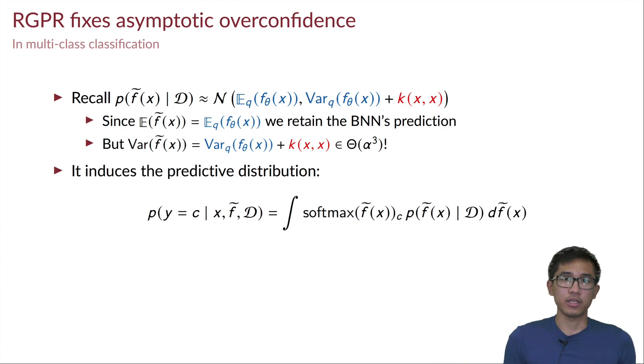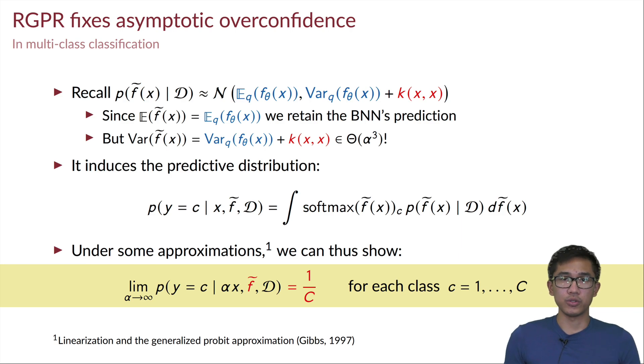And by integrating the softmax function with this RGPR measure, then we have this predictive distribution. And then by using the linearization again and also the multi-class version of the Laplace approximation, we can show that in the limit of α tends to infinity, this predictive distribution will always yield 1 over c, meaning that we achieve the uniform confidence far away from training data, and we do so in a very cheap and post-hoc manner.